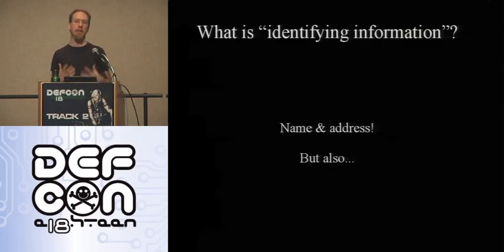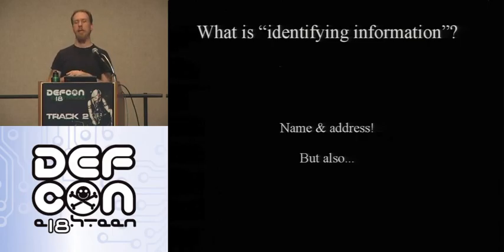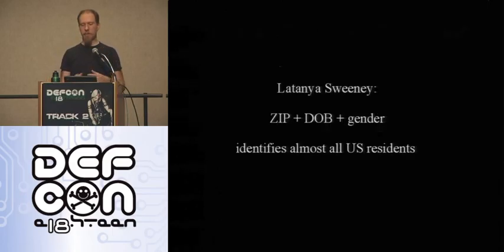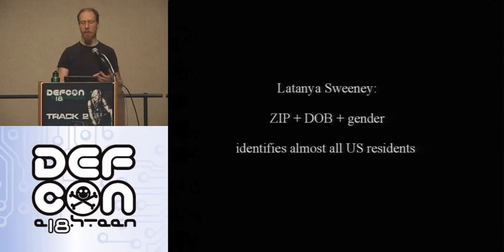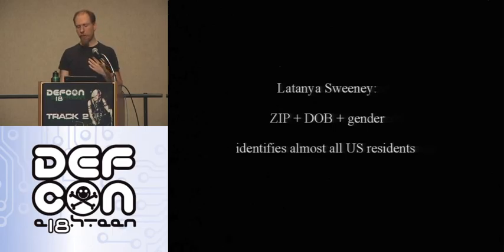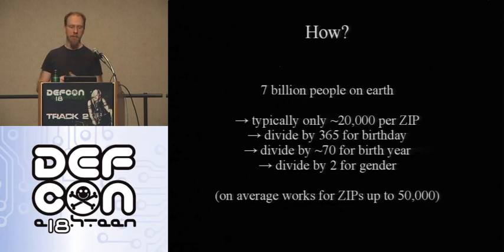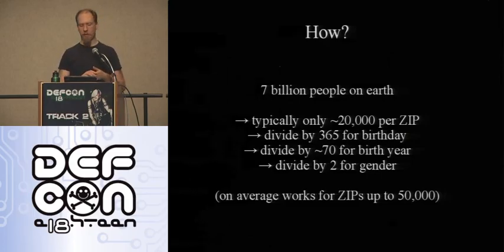Before we get to browsers, let's talk about identifying information. When we ask what kind of information identifies a person, we have some standard answers — like if I know their name and address I probably know who they are. But there are some more surprising examples. There's a paper by Latanya Sweeney from the 90s showing that someone's zip code, date of birth, and gender gives you about an 80% probability of identifying them uniquely.